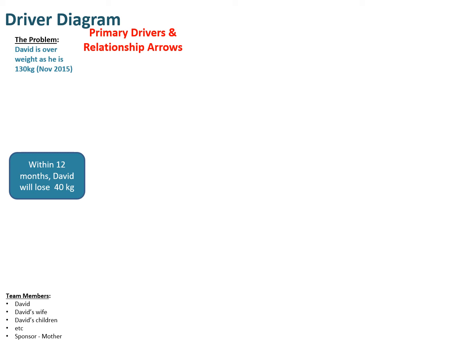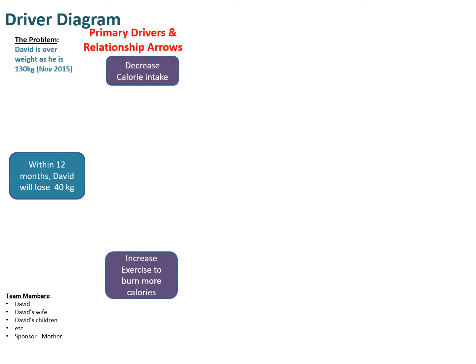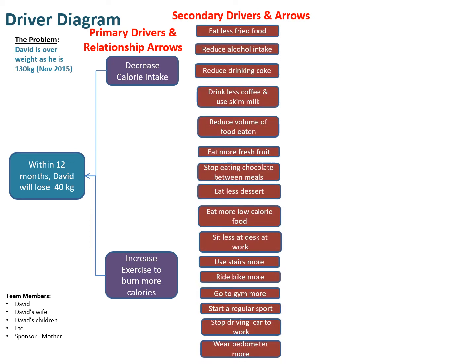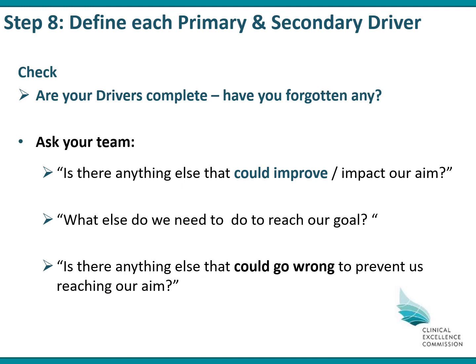Back to the driver diagram — put the reworded primary drivers in and draw relationship arrows to the aim statement. Then put in the secondary drivers and their relationship arrows to the primary drivers. Note that some secondary drivers may relate to more than one primary driver. For example, if David reduces alcohol intake, that helps decrease his calorie intake, and also makes him more likely to exercise. Double check that you have all your drivers by asking as a team: is there anything else we could do to improve our aim, or what else do we need to reach our goal, or what could go wrong to prevent us from reaching our aim?